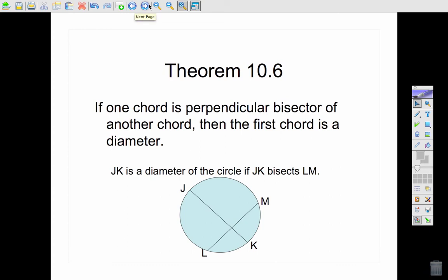Theorem 10-6, if a chord is perpendicular bisector of another chord, then that first chord is the diameter. So if I look here and if I see this is being bisected and I have a right angle, then I know JK is a diameter.